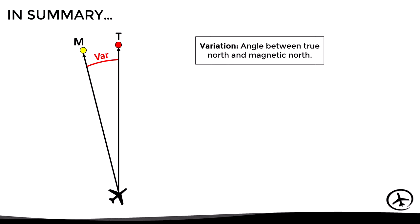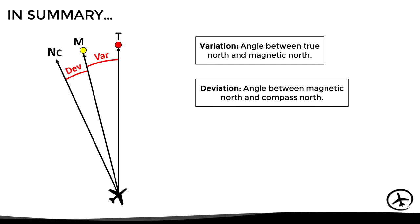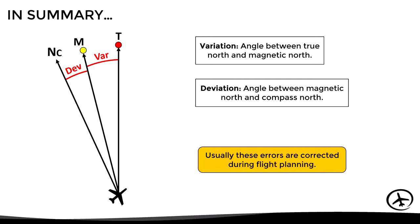In summary, the magnetic variation is the angle between true north and magnetic north, and it can be either east or west depending on our position on earth. The compass deviation is the angle between magnetic north and compass north, and it depends on each aircraft and its current heading. Usually these errors are manually corrected by the pilot during flight planning.